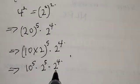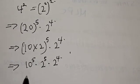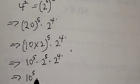We have 2 raised to the power 5 and 2 raised to the power 4. Since they have the same base, we add the exponents: this gives us 10 raised to the power 5 multiplied by 2 raised to the power 9.